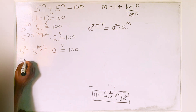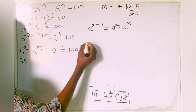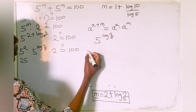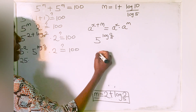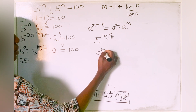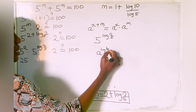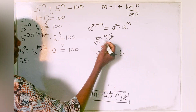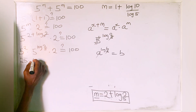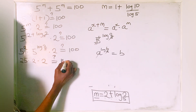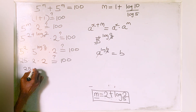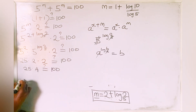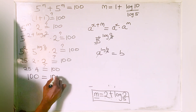Now 5 squared is 25. For 5 to the power of log 2 base 5, we apply the rule that a to the power of log b base a equals b, so the 5s cancel and we are left with 2. So we have 25 multiplied by 2, multiplied by 2, which is 25 times 4, and that equals 100. So the left-hand side equals the right-hand side.